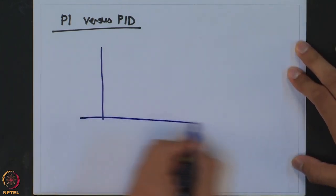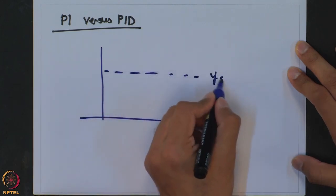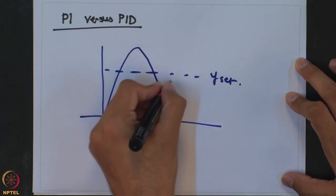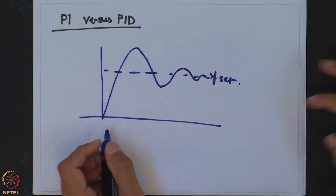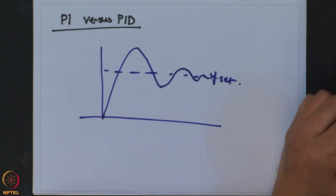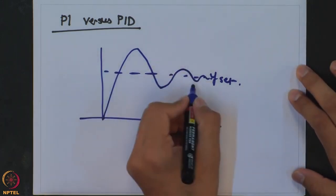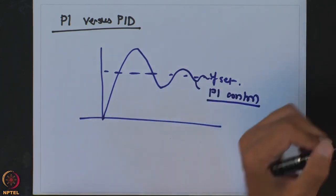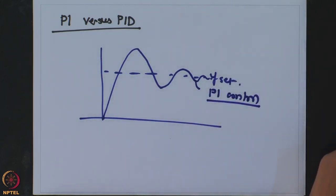Let us say we have the response of a PI controller and this is the set point. We have both an over-damped and an under-damped response from a PI controller. These oscillations occur when we have a larger contribution of integral action — it always tries to compensate for past errors more than the current error, and in that way you end up having oscillations around the set point.